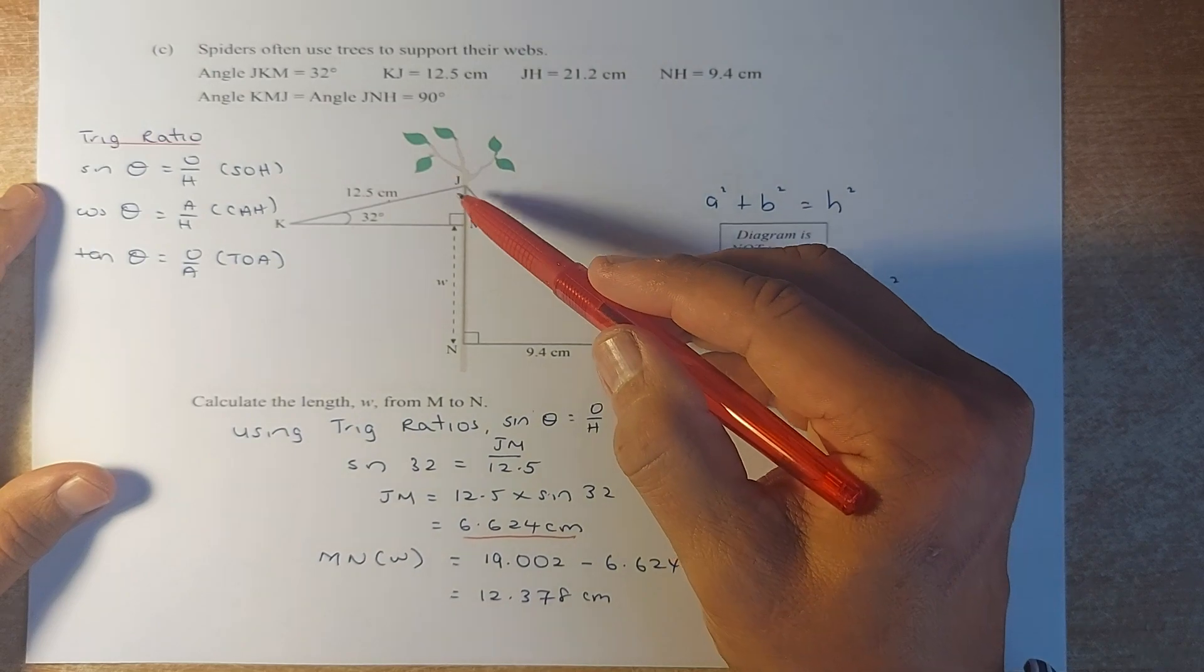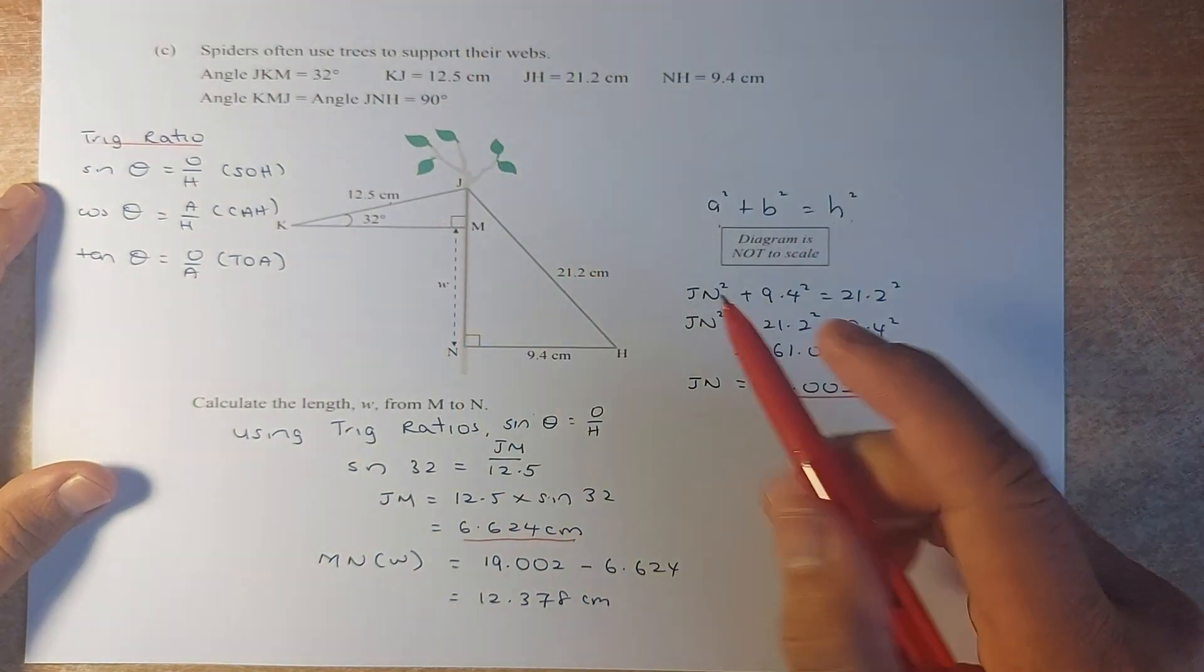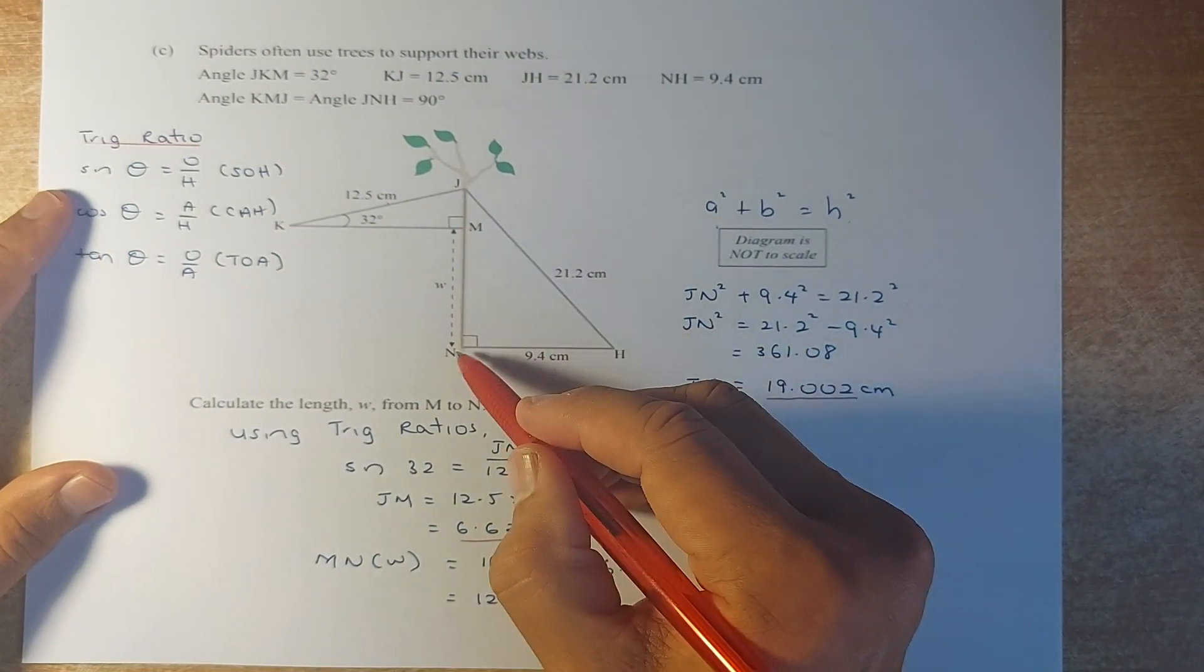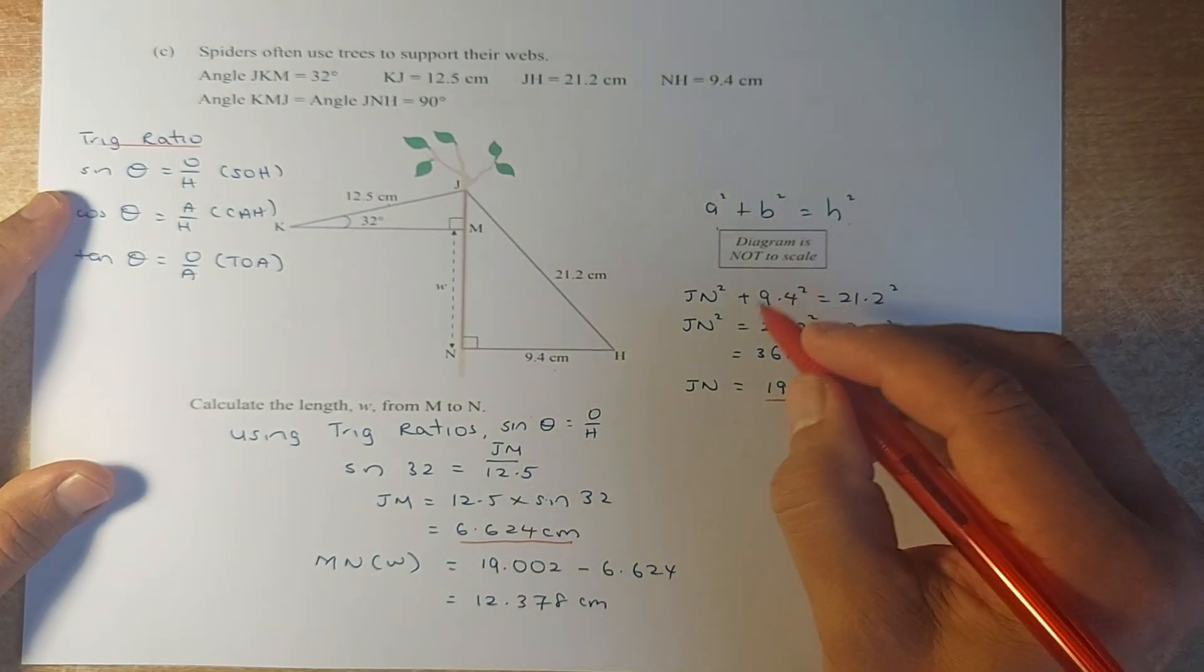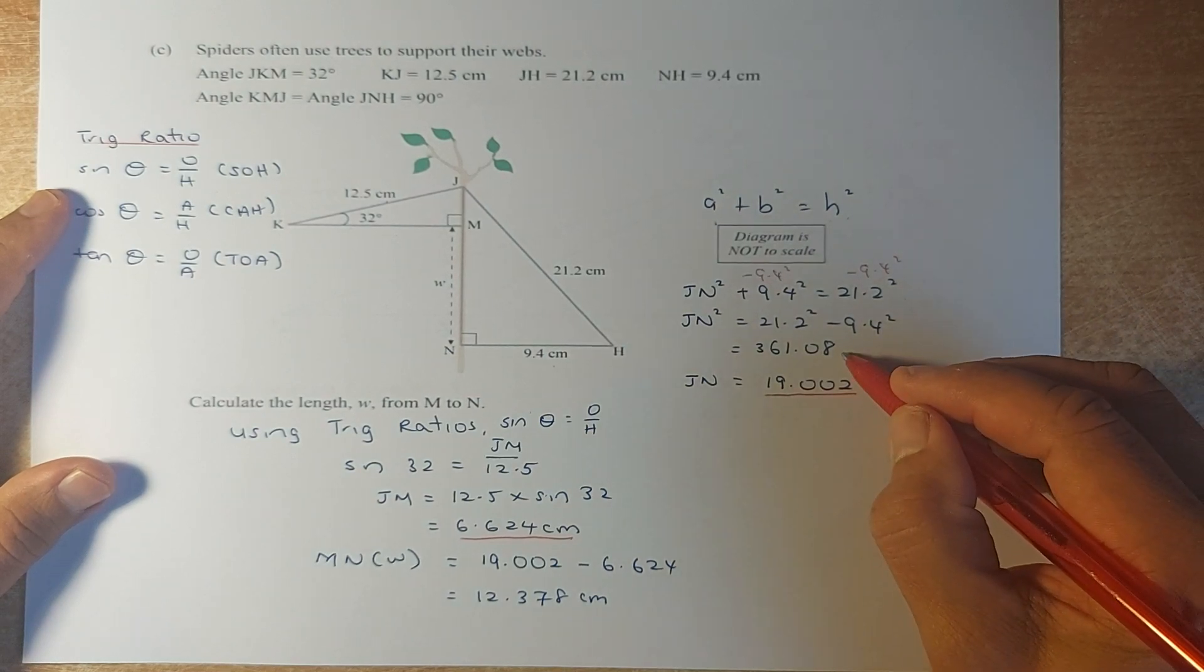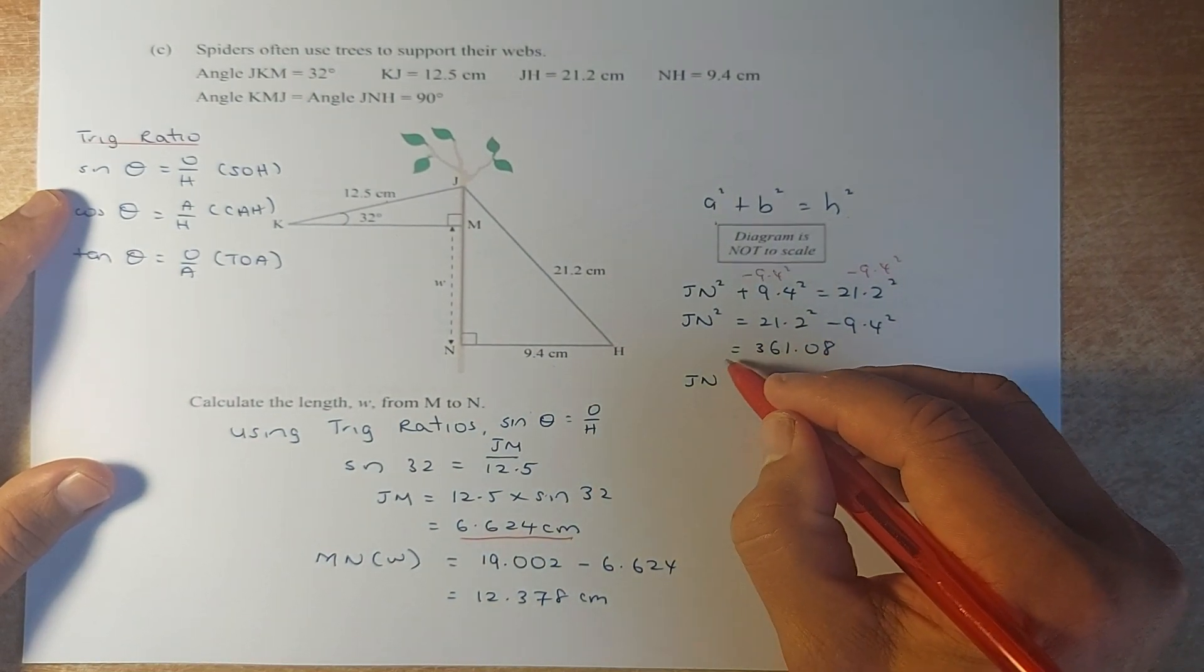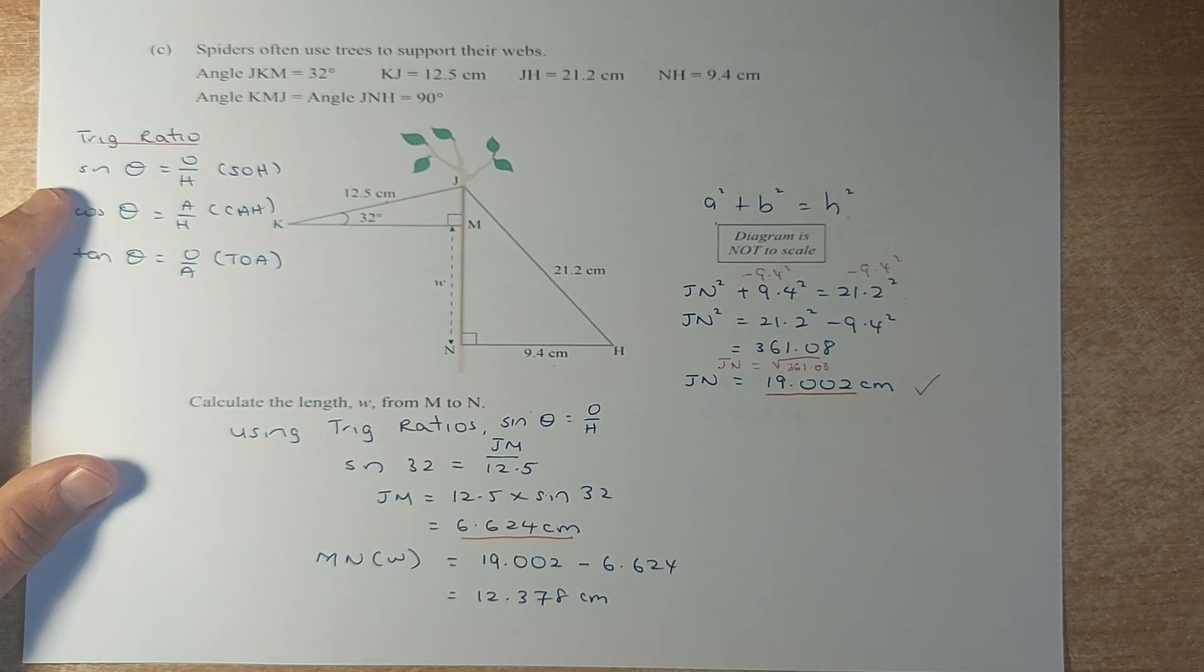We use Pythagoras because you do not know this length but you know these two other lengths. So A squared plus B squared equals H squared. So A squared is your JN squared plus 9.4 squared equals 21.2 squared. Then to get your JN squared, you take this number minus 9.4 squared. You minus 9.4 squared on both sides. This will cancel out. So you get 21.2 squared minus 9.4 squared. Put in your calculator. It's 361.08. To calculate your JN, you have to square root that number. Square root of 361.08. Put in your calculator. You should get 19.002. So we have calculated that length JH is 19.002.